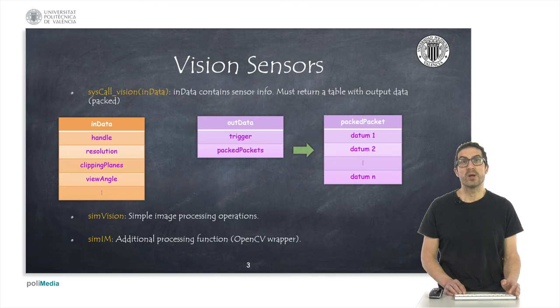Furthermore, CoppeliaSim uses two plugins that allow us to process images. Specifically, the SimVision plugin includes a set of simple operations and functionalities for image processing, such as edge or blob detection, among others. The SimCV plugin includes additional processing functions. This is an OpenCV wrapper with some limited functionalities, but in general sufficient for many problems. In this video, we will focus on the SimVision plugin.